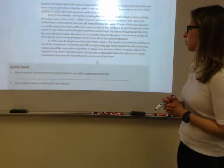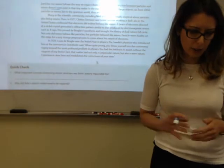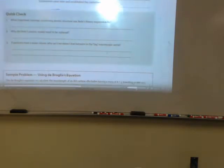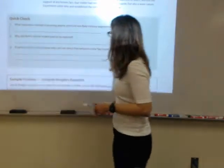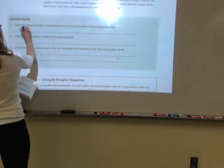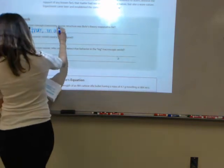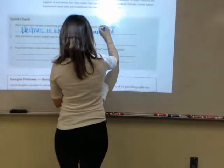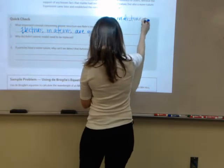And in 1929, Louis de Broglie won the Nobel Prize in Physics for everything that he had proposed. And let's take a look at the quick check here where it says, what important concept concerning atomic structure was Bohr's theory responsible for? Well, he explained the emission line spectra. He said that electrons in atoms are quantized. Quantized means they exist in distinct energy levels or distinct levels.